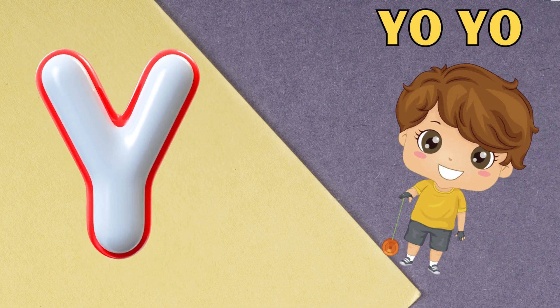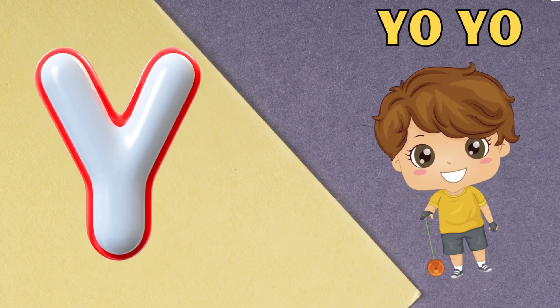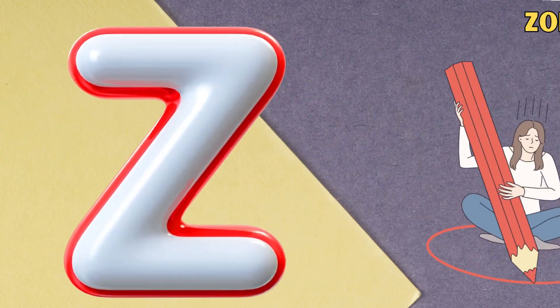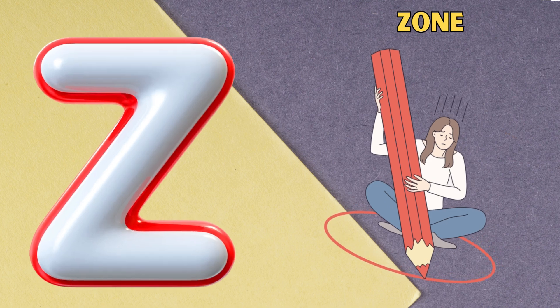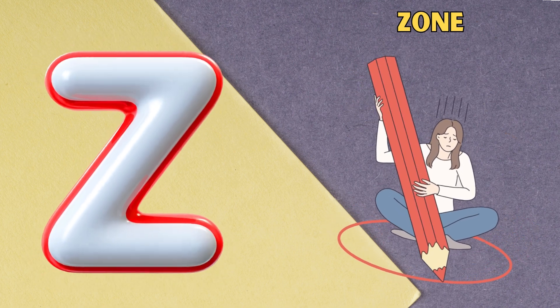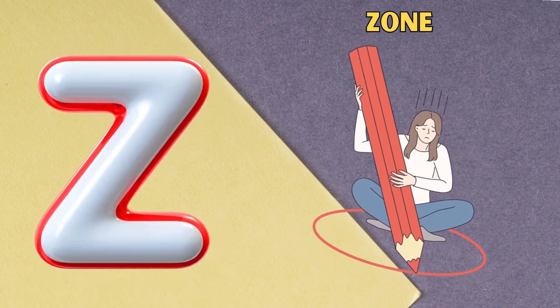Y is for yo-yo, y, yo-yo. Z is for zone, z, zone.